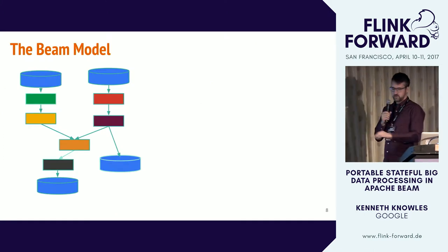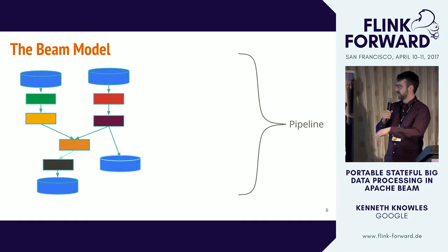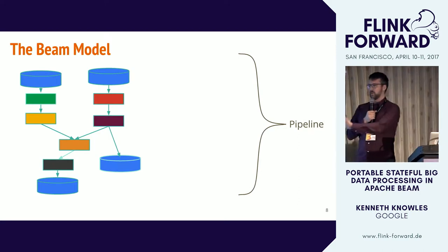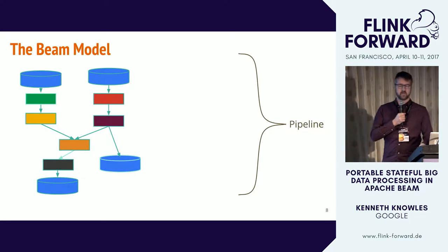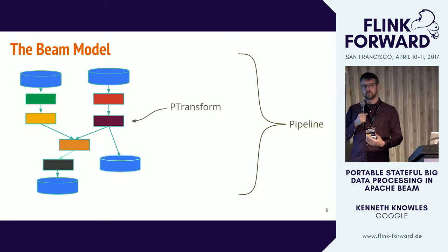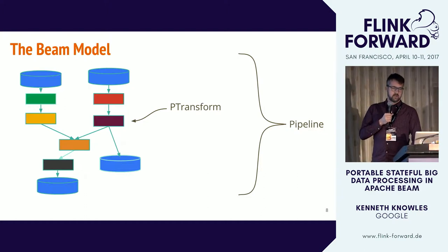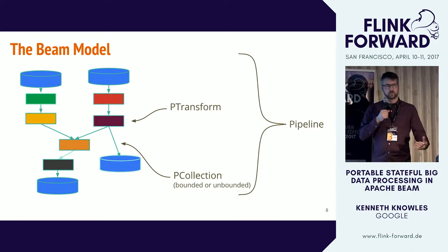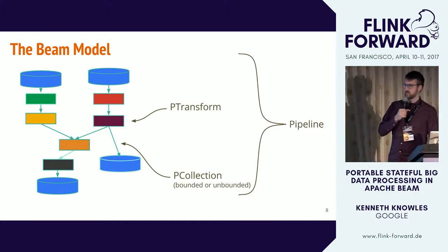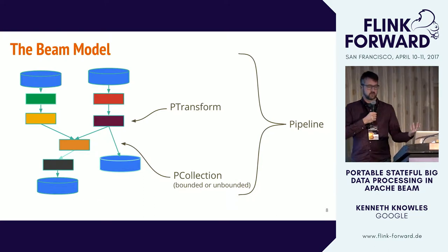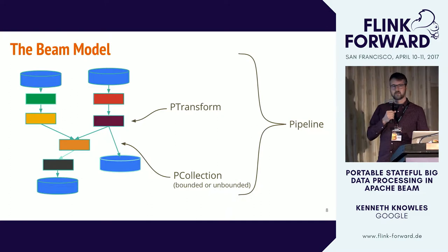Returning to the vocabulary: we call this a pipeline in Beam. The squares are massively parallel computations — we call them p-transforms. The arrows are the data flowing between p-transforms — we call them p-collections. You shouldn't interpret this as any kind of finite collection; a p-collection could be bounded, meaning we know it's finite, or unbounded, meaning we don't know — basically what you'd consider a data stream.